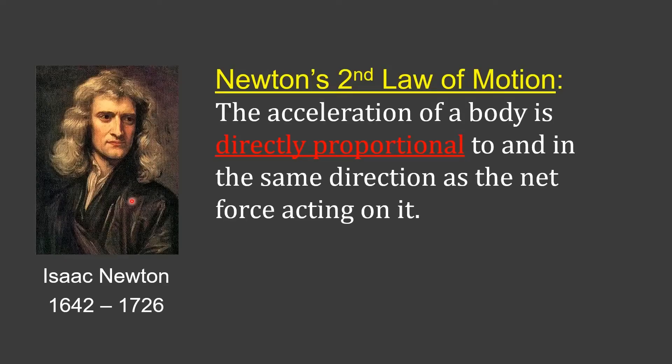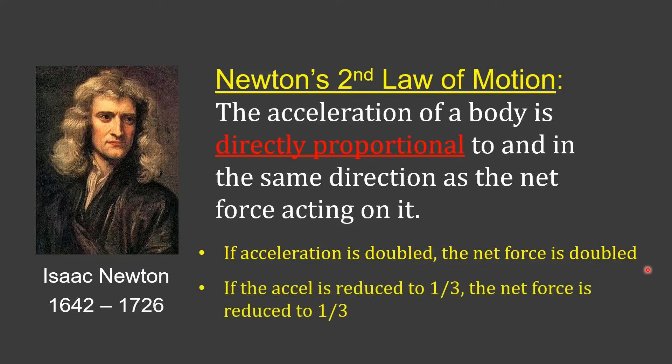The other thing I want to point out about this early version is the term directly proportional. How a direct proportionality works is it's often referred to as a one-to-one relationship. So for example, if the acceleration is doubled, the net force is doubled. Another example: if the acceleration is reduced to one third, then the net force is reduced to one third. So it's a one-to-one relation - whatever happens to one, that same multiplicative factor happens to the other as well.